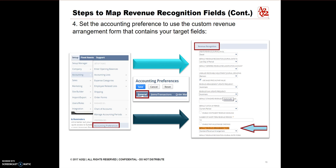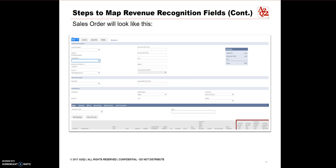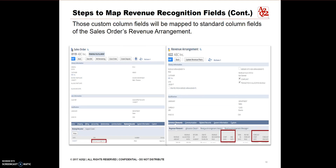The last step is to set up the accounting preferences. Go to Setup, select Accounting, then click on Accounting Preferences. Click the General sub-tab and scroll to the Revenue Recognition group of the Preferences. Select your custom form from the Default Revenue Arrangement Form drop-down, then click Save. This is an example of the Sales Order page. Now you will see that the custom column fields are mapped into the standard column fields on the right screenshot.